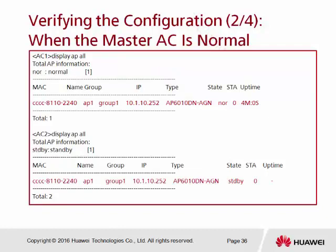Here is another very useful command: 'display ap all'. We can always use this command to check the current connectivity status for all APs. The table shows the MAC address, group name, IP address, model, and status of each AP. Status 'N' stands for Normal — the AP is connected. On AC2, using 'display ap all', the state shows as standby for the backup AC.